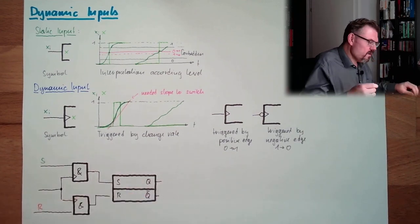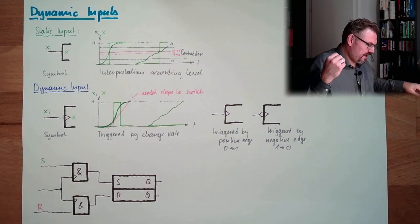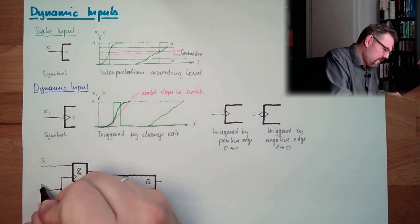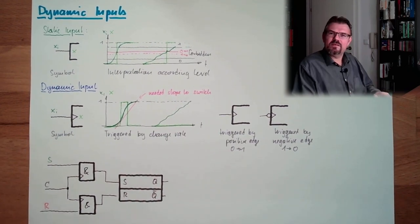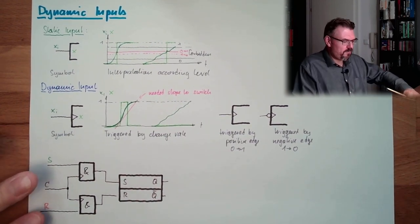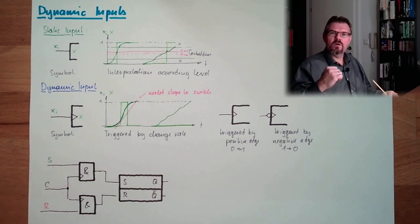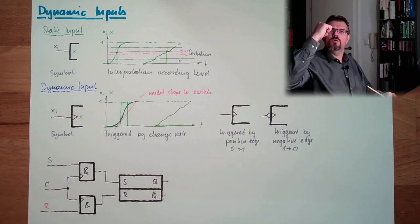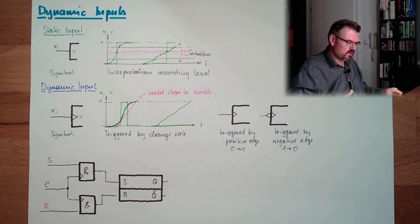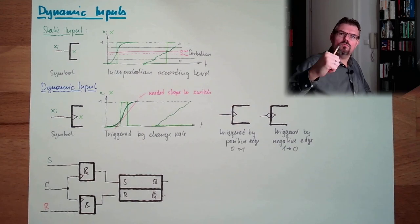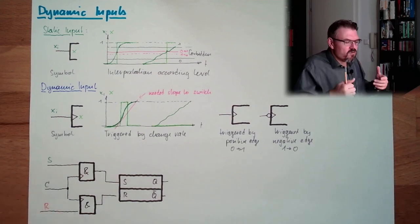We have an R line. And with a signal called clock, C, we can exactly determine the moment in time when this will be stored. So, I can prepare already S and R. And with the clock line, it will be stored. So, now look. The clock is usually periodically. And every time the clock is having a rising edge, it will be stored.